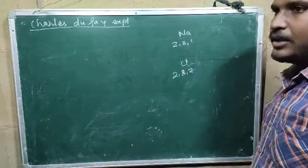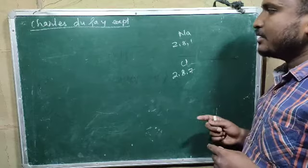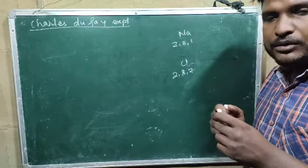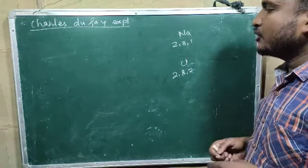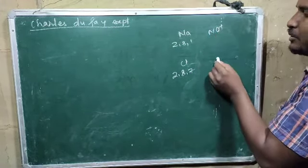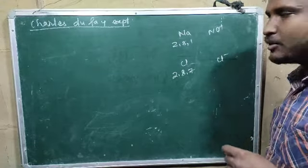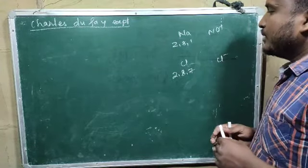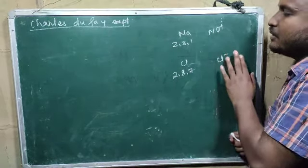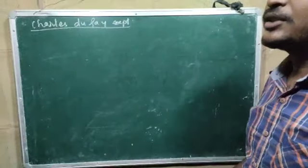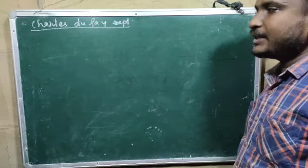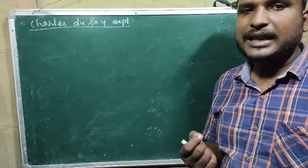In the last class I showed you that if you take a sodium atom, its electronic configuration is 2,8,1. And if you take a chlorine atom, its electronic configuration is 2,8,7. So when you rub, there is a chance that one electron will be transferred from sodium to chlorine. This electron has been transferred due to rubbing, which is due to friction. So that is why sodium will become Na+ and chlorine will become Cl-. That means sodium got charged and chlorine also got charged. This charging occurs due to friction, that is why this is called charging by friction.